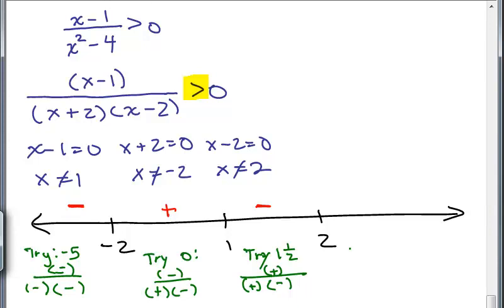And then over to the right of 2, pick any number you want. How about 10? Alright. So, if I'm putting 10 into the numerator, x minus 1, 10 minus 1 is positive. And 10 plus 2 is 12, which is positive. 10 minus 2 is 8, which is positive. So, that's going to be positive. And again, if you want, you could actually put 10 in the original fraction here. 10 minus 1 is positive. And 10 squared minus 4 is also positive. It doesn't really matter. And positive number greater than 0 will still be positive. So, there isn't just one way to do this.